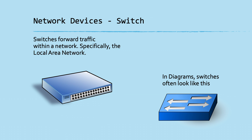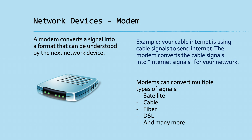Then we have a network switch. A switch allows devices on a local area network to talk to each other. Routers connect networks to each other; switches allow devices on the local area network to communicate. This allows your printer to talk to your iPhone, your iPhone to talk to your computer, your computer to talk to your tablet, and so on.